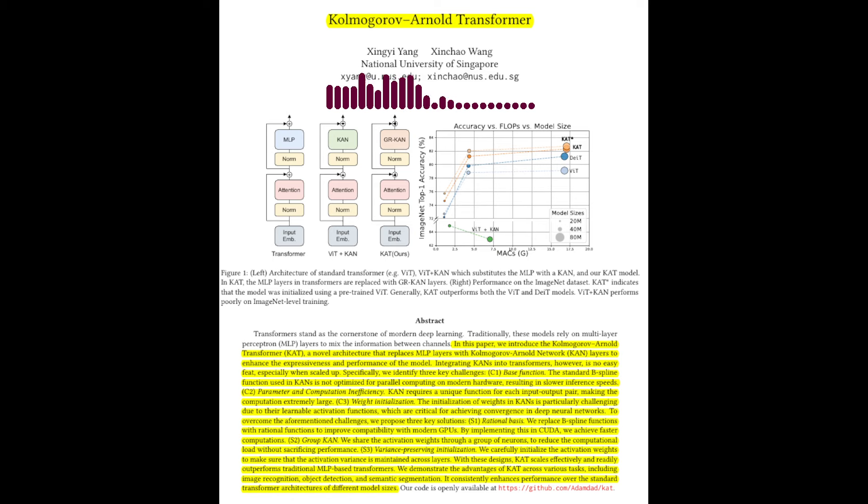This paper proposes replacing the traditional multilayer perceptron MLP layers in transformers with Kolmogorov-Arnold network, CAN layers.